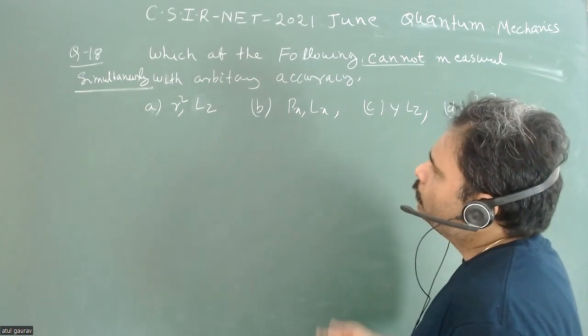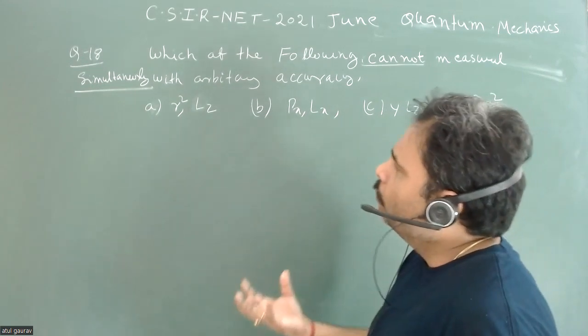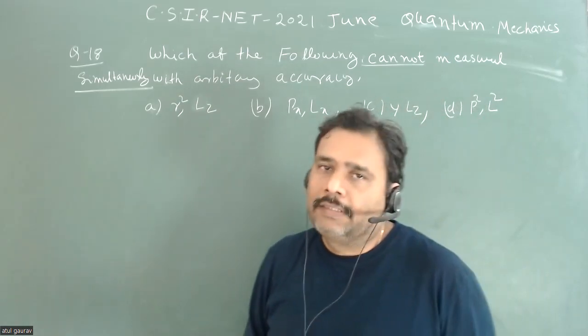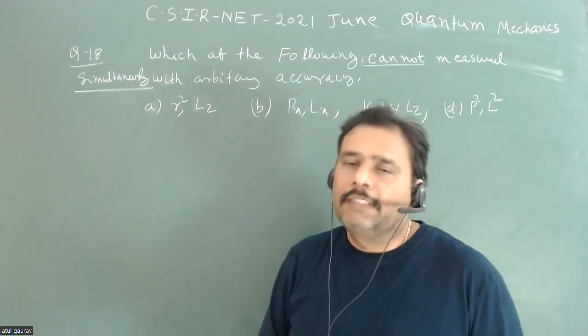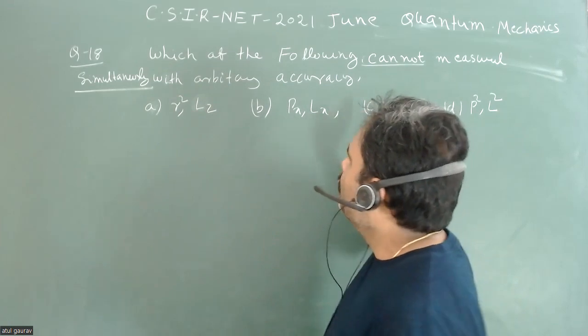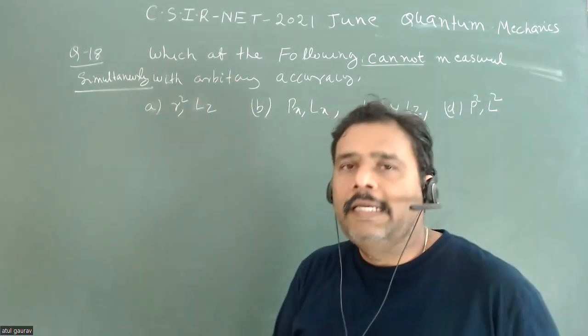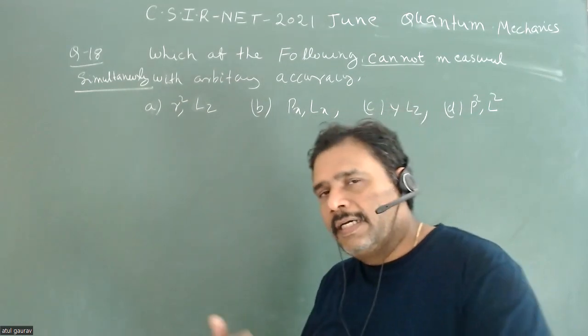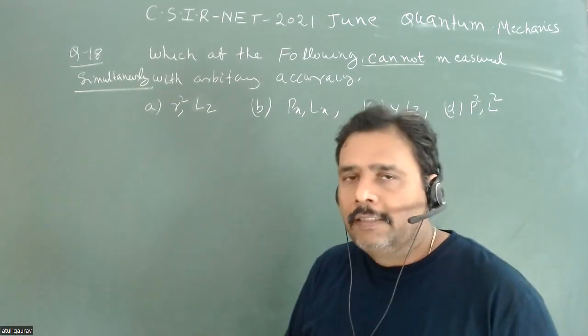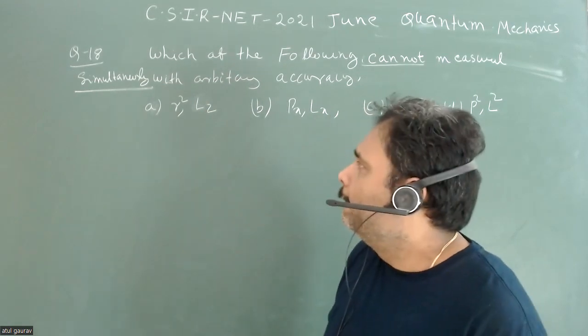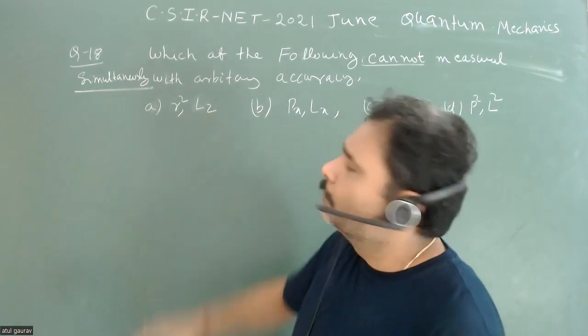We have to choose which pair of operators cannot be measured simultaneously with arbitrary accuracy. If they cannot be measured simultaneously, there is some error. How will we approach this?